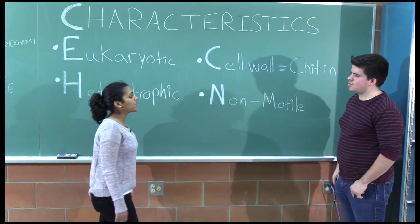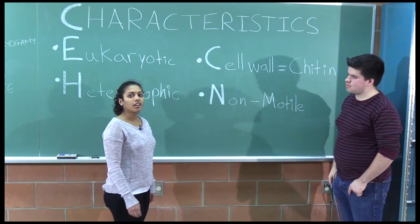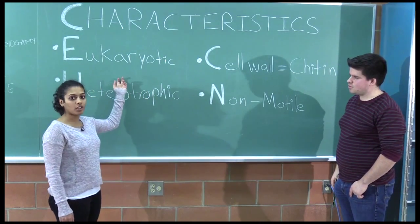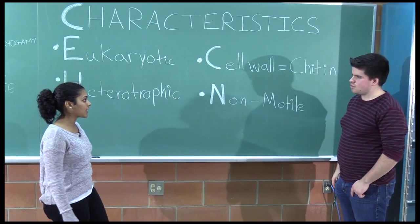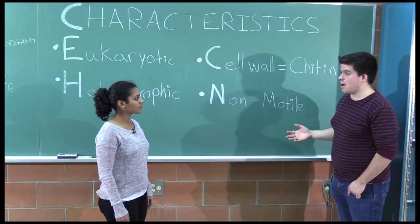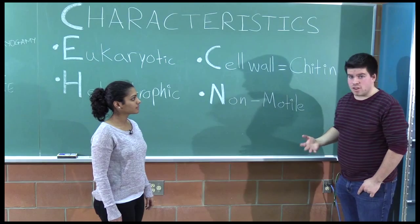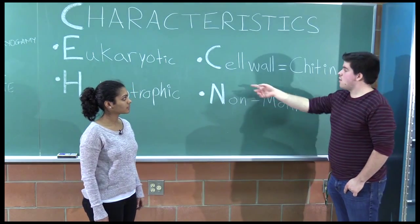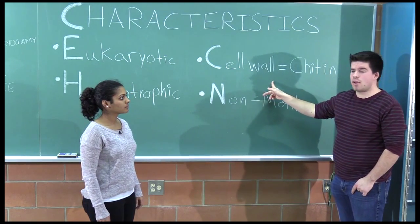So let's look at some of the basic characteristics of fungi. Well, like plants and animals, they too have a nucleus that makes them eukaryotic. And it was originally thought that fungi are just like plants. First of all, because they have a cell wall. But the fungi cell wall is made of chitin.